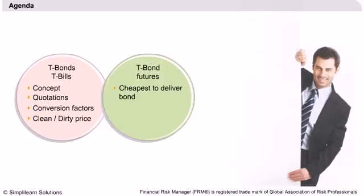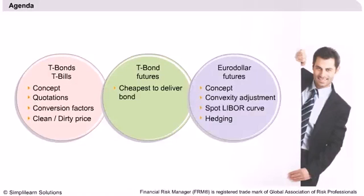We will then introduce the concept of cheapest-to-deliver bonds — the bonds which are most profitable to deliver for the short seller of futures. We will also learn how to calculate the cash price of a futures contract using time value of money concepts. Next, we will cover Eurodollar futures, which are futures on the rate earned by dollar deposits outside the USA, and how they are used to lock into the short-term 90-day LIBOR — the London Interbank Offered Rate. We will briefly cover the convexity adjustment applied to Eurodollar futures and how they extend the LIBOR zero curve, then end the session with duration-based hedging.